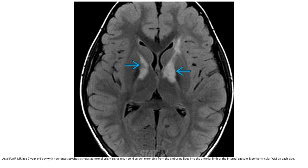MRI in a 9-year-old boy with new-onset psychosis shows abnormal T2 signal extending from the globus pallidus into the anterior limb of the internal capsule and periventricular white matter on each side.